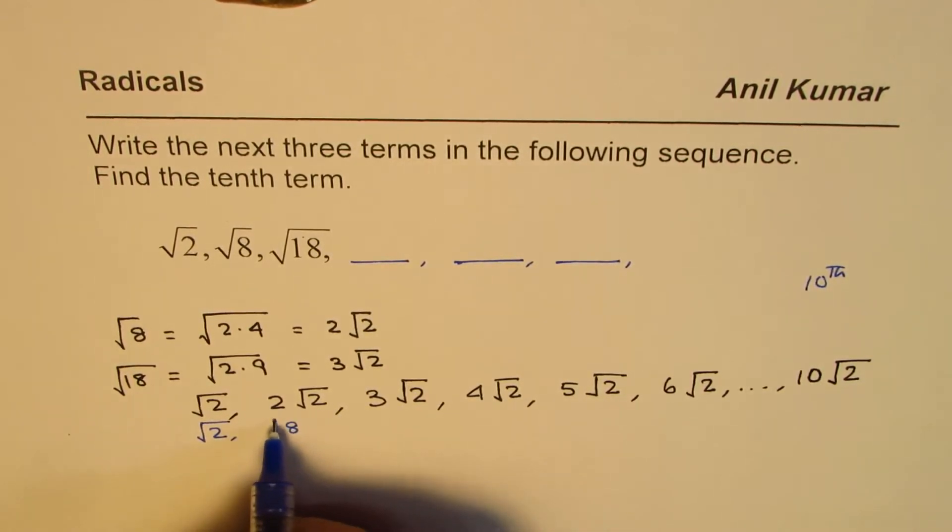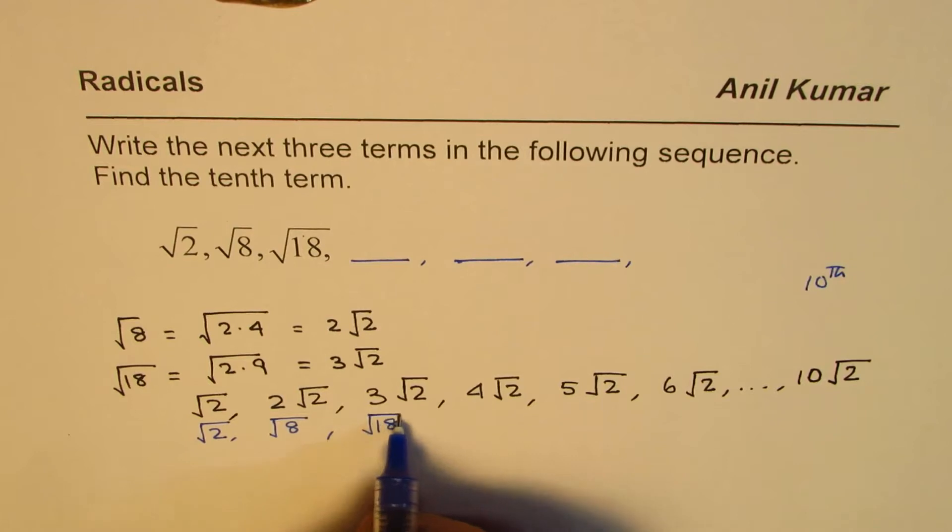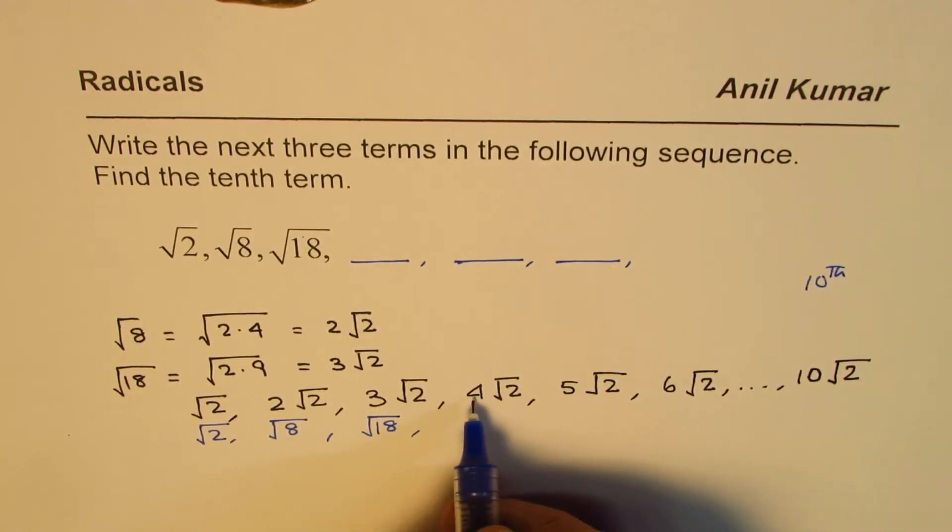3 square is 9, 9 times 2 is 18, and 4 square is 16, and twice 16 is 32.